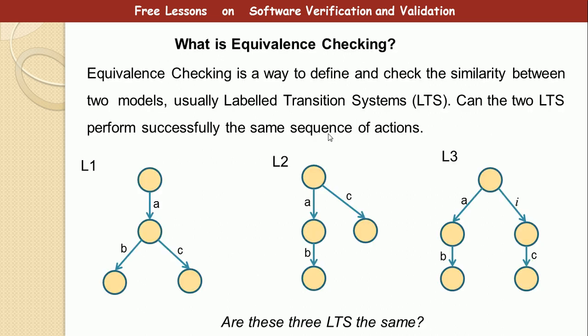What is equivalence checking? Equivalence checking is a way to define and check similarity between two models. It's applied in software verification because in the course of verification you might have to modify something — for example, you may have to rewrite an equation and then make sure that the two equations haven't changed anything. Theoretically speaking, you need to check for two models, usually a labeled transition system, to check if they are the same. The question is: can the two models perform the same sequence of actions?